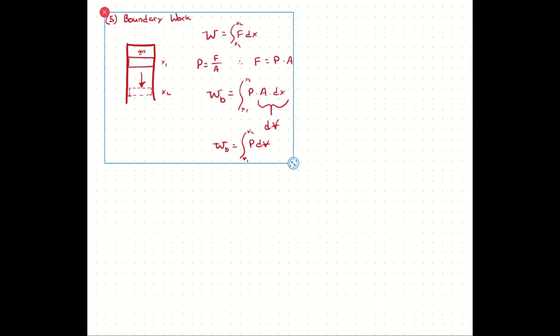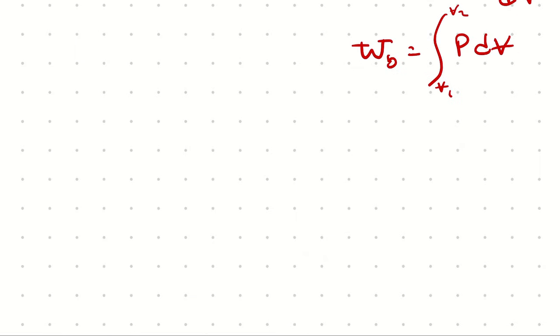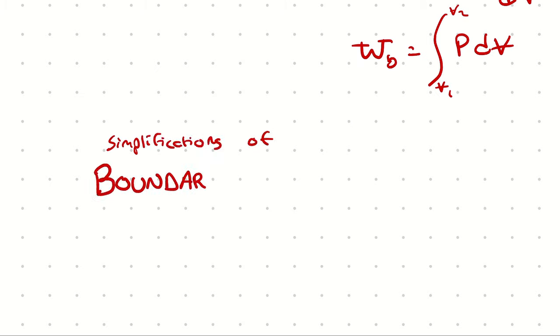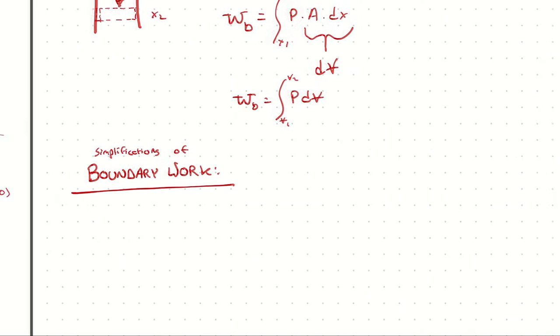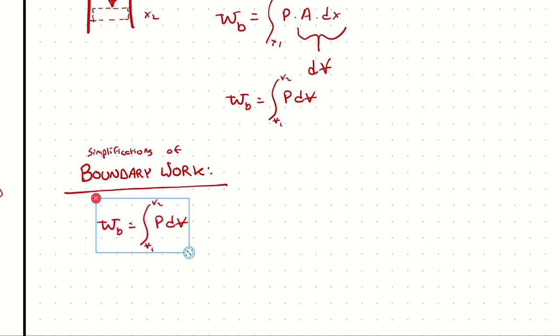In our conversation about work, one of the shorthand simplifications we had come up with was called boundary work, which is the work associated with a moving boundary. What I would like to do now is generate an even more specific list of shorthand simplifications for boundary work specifically. Let's start a list called simplifications of boundary work, and I'll bring over our definition of boundary work just to remind us of what it actually is.